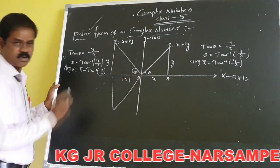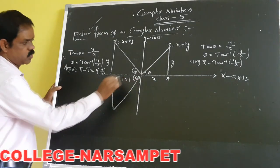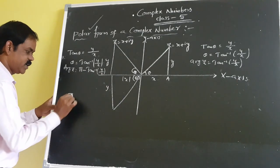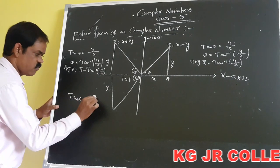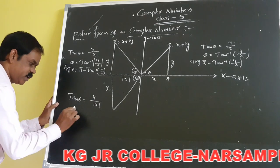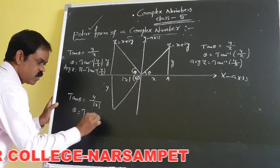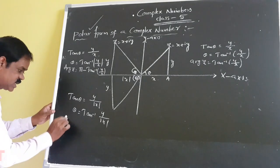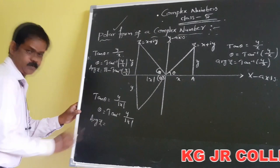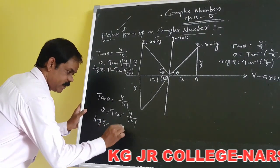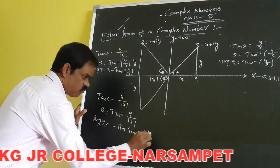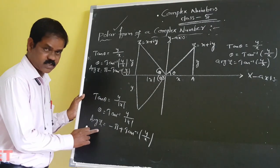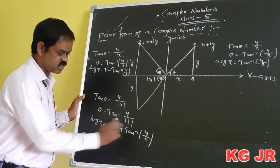For the third quadrant, the modulus values are |X| and Y. From the third quadrant, you take tan θ equals Y by |X|, so θ equals tan inverse of Y by |X|. For the third quadrant, you have to consider the argument of Z equals minus π plus tan inverse of Y by X.